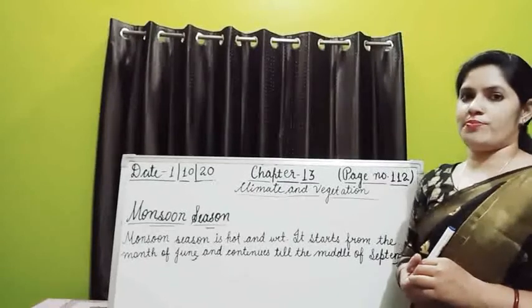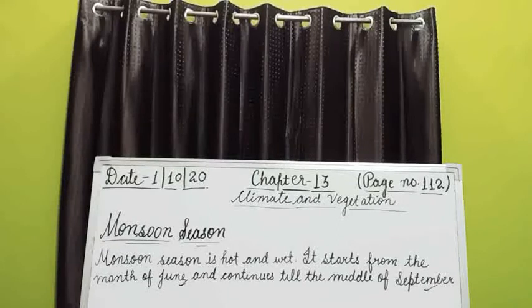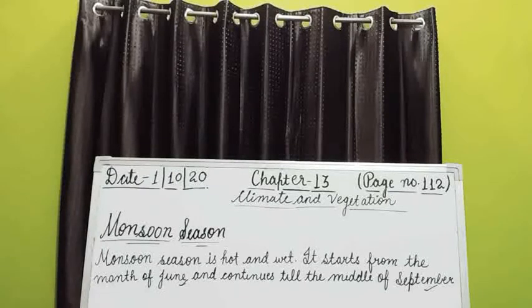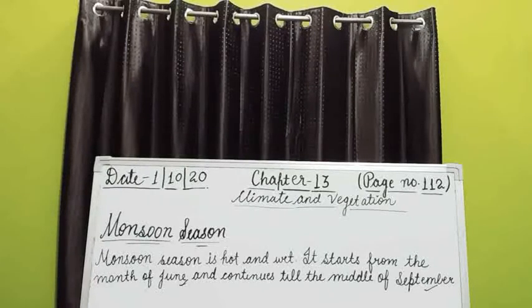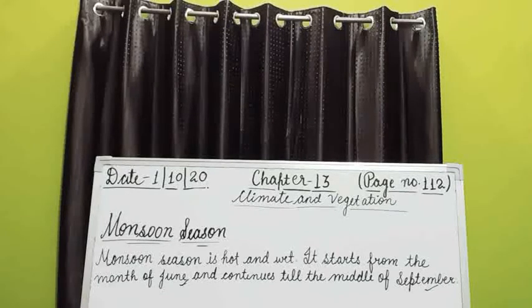Open page number 112. The word monsoon comes from the Arabic word 'mosin' which means weather. The rainy or monsoon season normally lasts from June to September. The hot, wet wind season in South Asia is called the monsoon season. It is also called the southwest monsoon season.